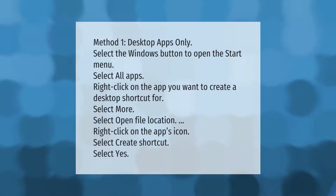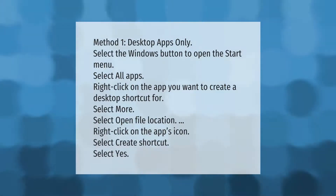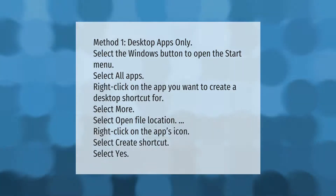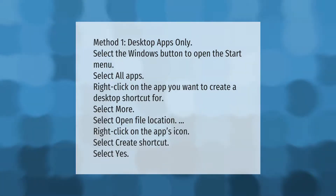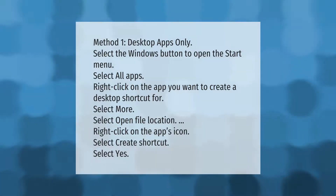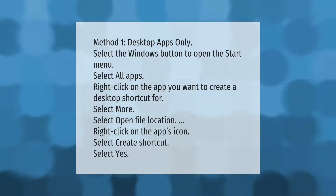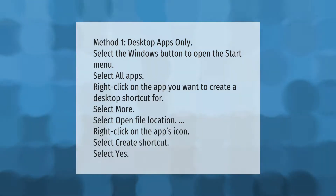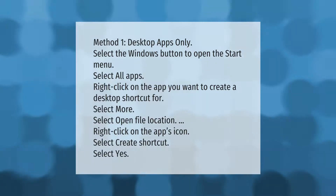Method 1 - Desktop apps only: select the Windows button to open the Start menu, then select All Apps. Right-click on the app you want to create a desktop shortcut for, select More, then select Open File Location. Right-click on the app's icon, select Create Shortcut, then select Yes.